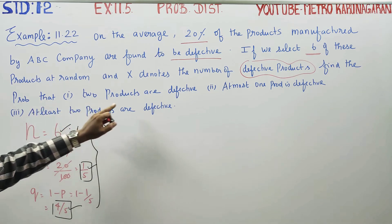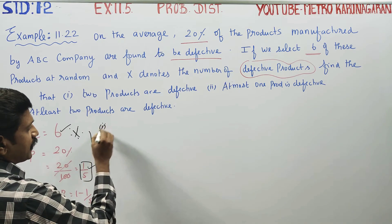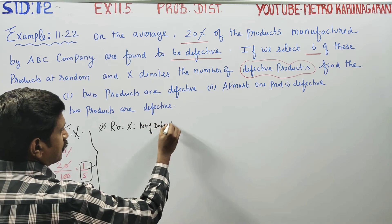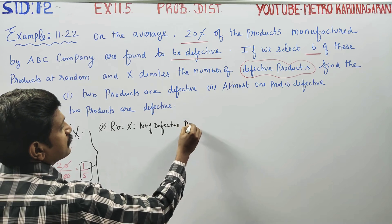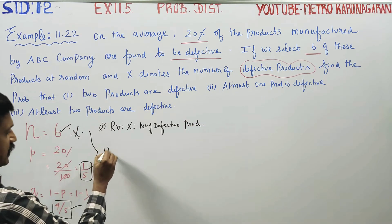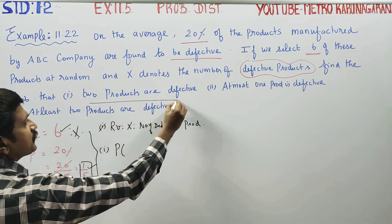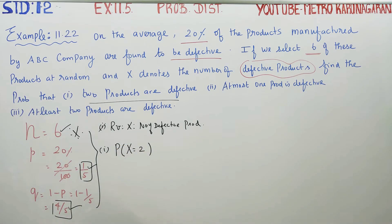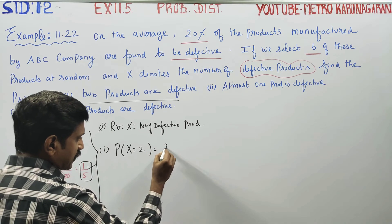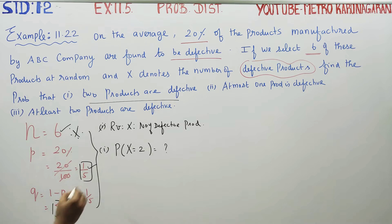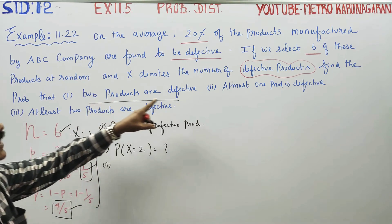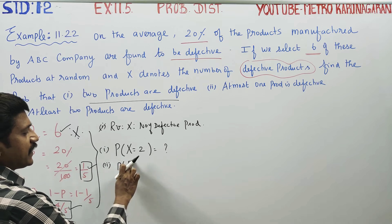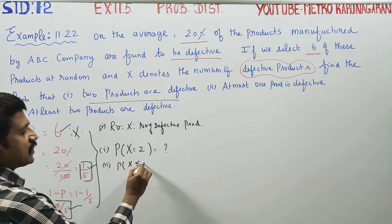First question: two products are defective. Exactly two products are defective. P of X is equal to 2.